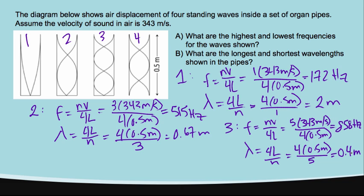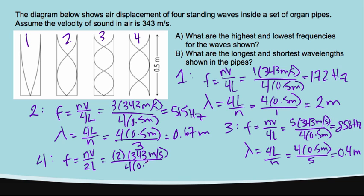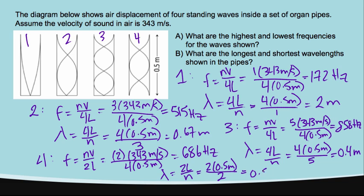The last pipe is an open-ended tube on both ends. We're at the second harmonic, N equals 2, so we use frequency equals Nv over 2L. Plugging in: 2 times 343 over 2 times 0.5 meters gives a frequency of 686 Hz. The wavelength equals 2L over N, which is 2 times 0.5 meters over 2, giving a wavelength of 0.5 meters.